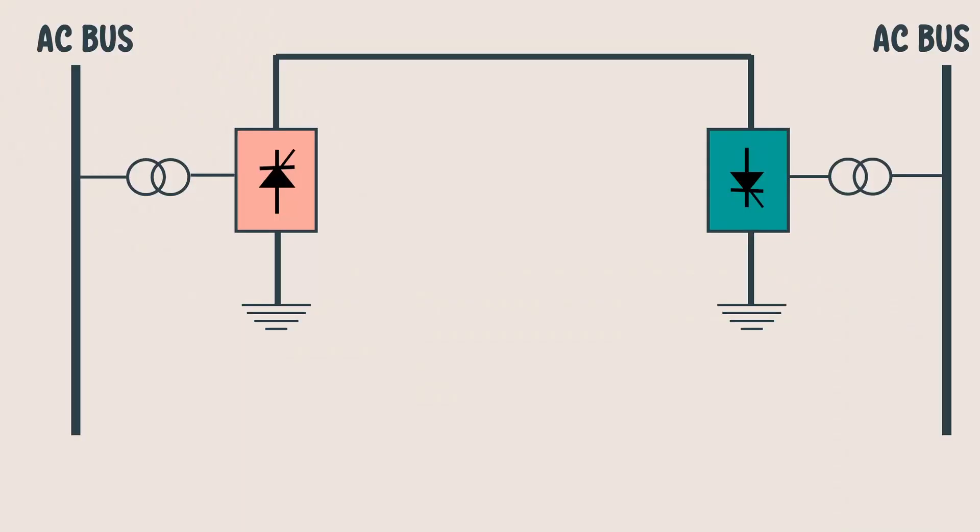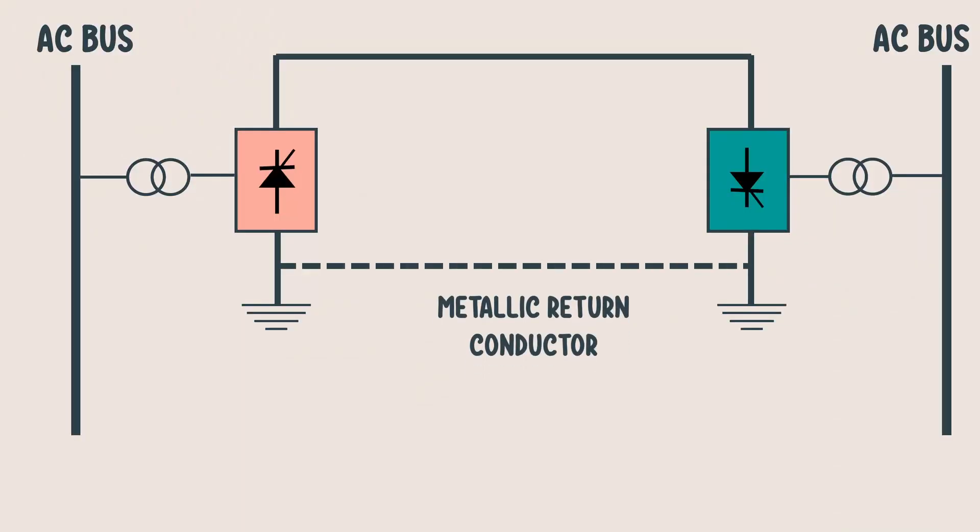In some cases, there are environmental restrictions that prevent the use of ground return. In such cases, it is necessary to adapt a metallic return conductor.